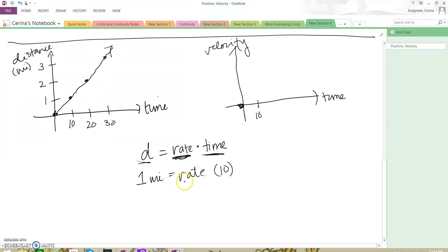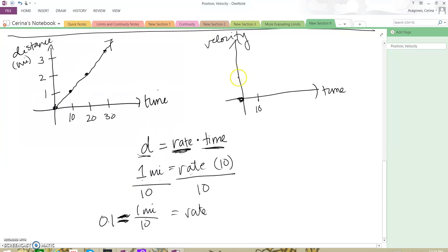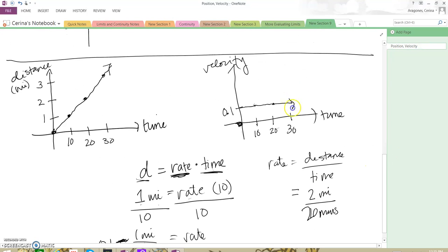Then at 10 minutes, we traveled one mile. To find our rate of change or our velocity, we know that one mile equals rate times 10. We divide both sides by 10. Then we get that rate is equal to one mile over 10, which is equal to 0.1. So we know at 10 minutes, our velocity is 0.1. Then at 20 minutes, we know our rate again is equal to the distance over time, which is equal to 2 miles over 20 minutes. Again, our velocity is 0.1. Then at 30, it's the same. As you can see, our velocity is constant, and we can see that because we have a constant rate of change: one mile per 10 minutes.